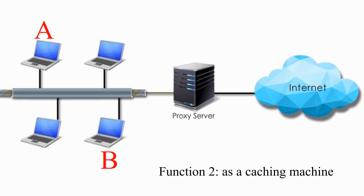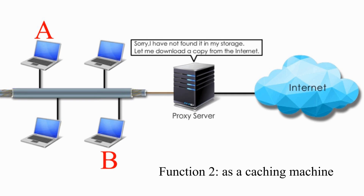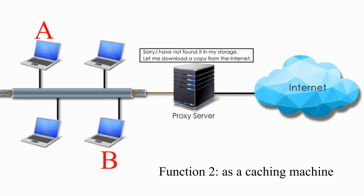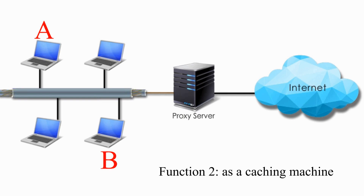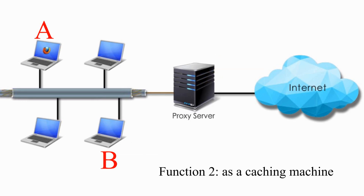Two: a proxy server can act as a caching machine. For example, client A wants the latest version of Firefox. The proxy first checks its cache — it hasn't found it in storage, so it downloads a copy from the internet. The proxy server goes to the Mozilla website and downloads the software. Then it forwards a copy to client A and keeps a copy in its cache. Next time, when client B asks for a copy of Firefox, the proxy server checks its cache and gives client B a copy directly from its cache without having to go to the Mozilla website. Thus, it reduces network traffic and improves network performance.